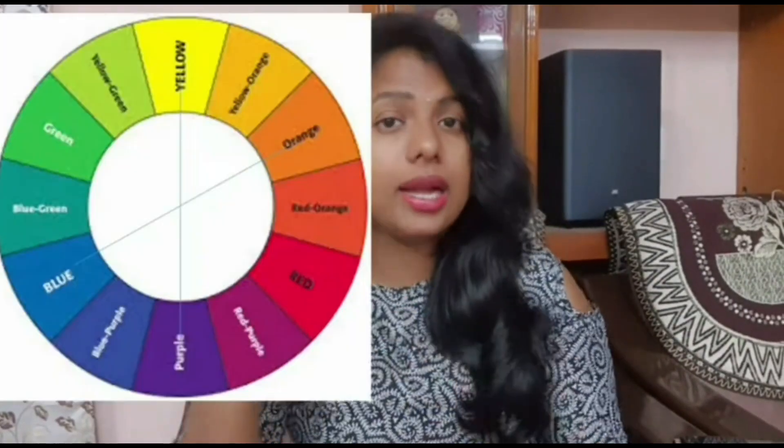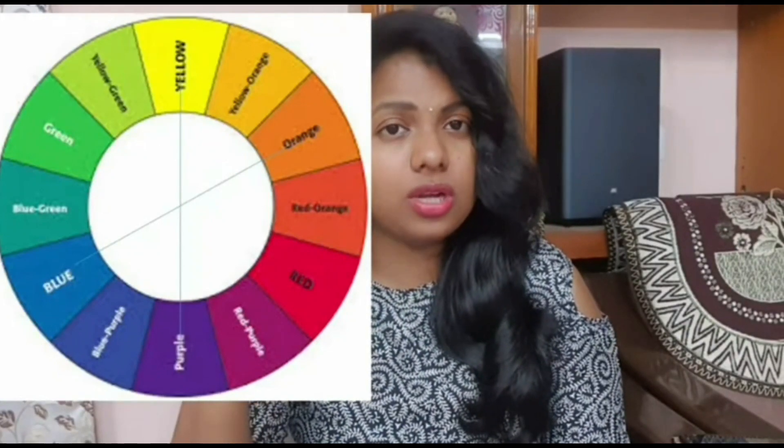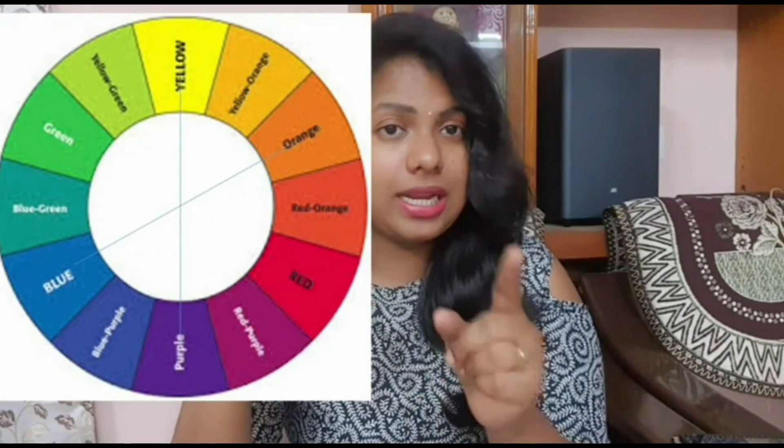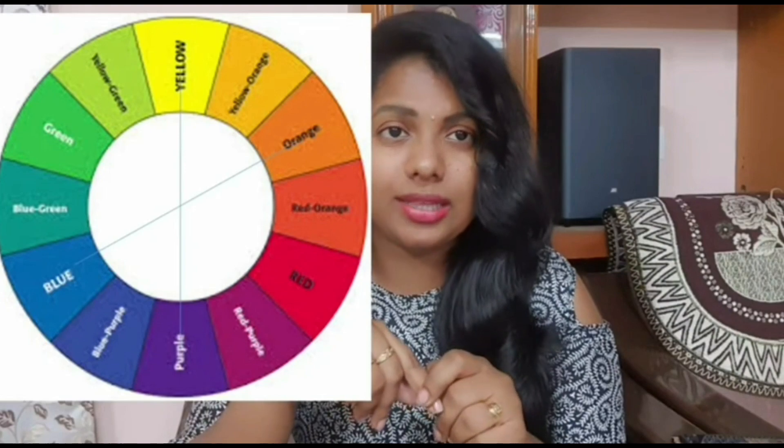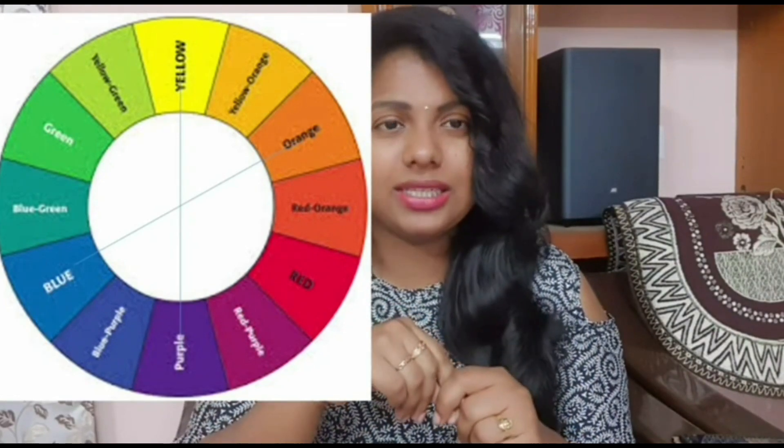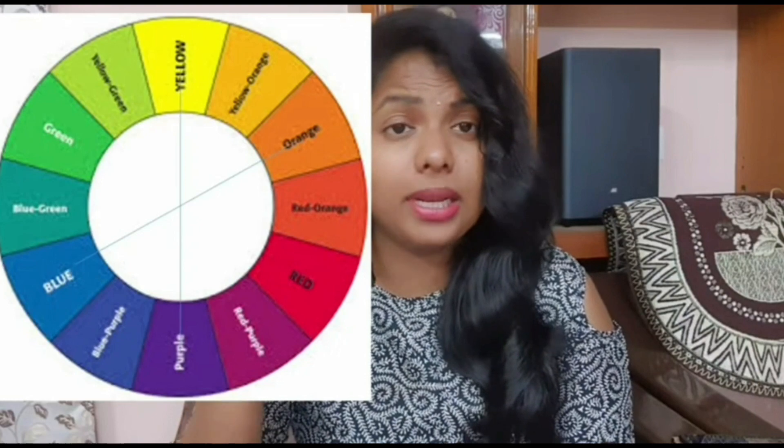The first is the complementary color scheme. When we look at the color wheel, we pick the opposite colors. For example, pink and green are opposite each other on the color wheel — that combination is super, and it is highlighted. This is an evergreen combination.